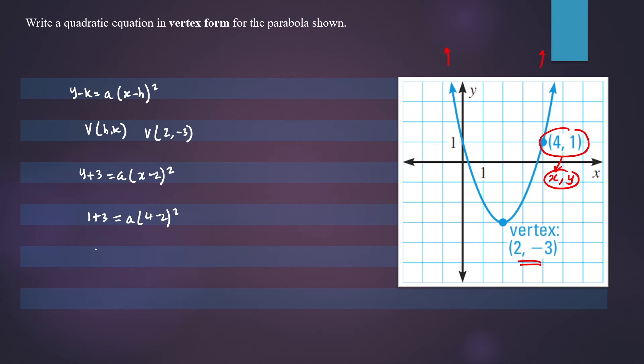So 1 plus 3 is 4. A times, 4 minus 2 is 2, 2 squared is 4. So a would be equal to 1.